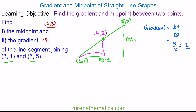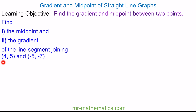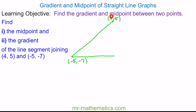Let's try another question. We've been asked to work out the midpoint and the gradient between (4, 5) and (-5, -7). We'll begin by sketching the two points as a line segment. We'll find the change in x as the difference between -5 and 4, which is 9, and the change in y as the difference between 5 and -7, which is 12.